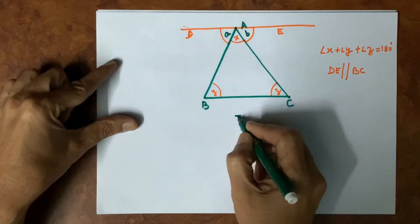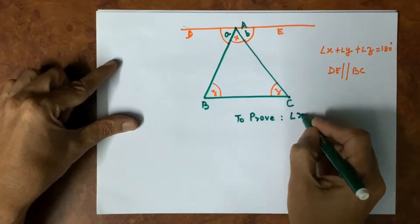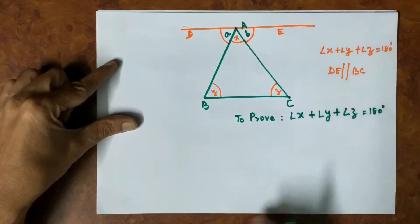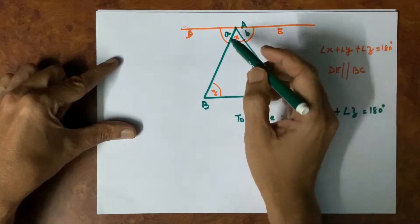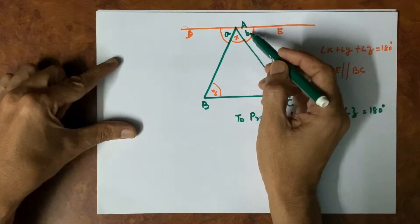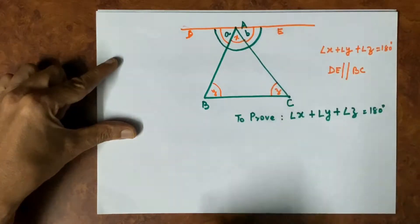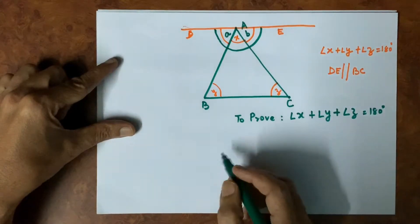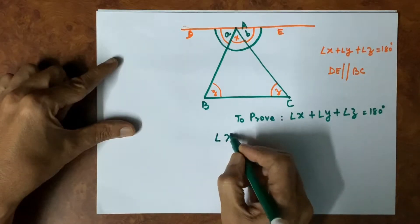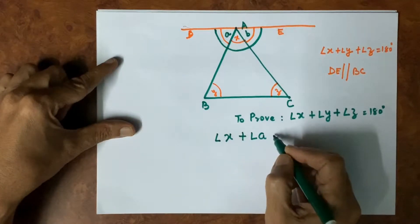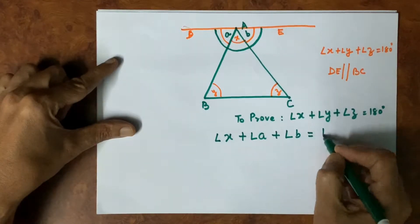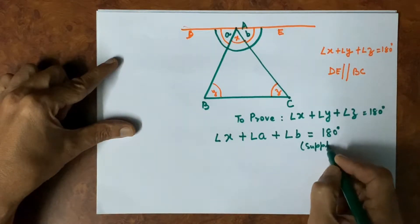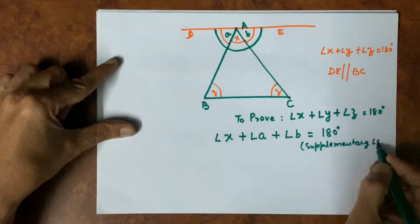Now, to prove angle X plus angle Y plus angle Z is equal to 180 degrees, we see that angle A plus angle X plus angle B — this whole angle — is equal to 180 degrees. These are supplementary angles on a straight line.